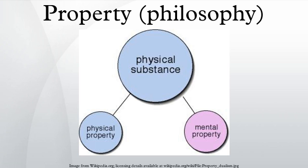A relation is often considered to be a more general case of a property. Relations are true of several particulars, or shared amongst them. Thus the relation 'is taller than' holds between two individuals. Relations can be expressed by n-place predicates, where n is greater than 1. It is widely accepted that there are at least some apparent relational properties which are merely derived from non-relational properties. For instance, 'A is heavier than B' is a relational predicate, but it is derived from the two non-relational properties: the mass of A and the mass of B.